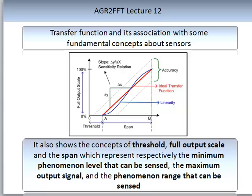This graph shows how we determine accuracy and the maximum and minimum measurement. All of these considerations must be monitored and recorded during sensor development. You can see the phenomenal range and how it is calculated. The response shown here is linear. In red is the ideal transfer function — the slope gives you the sensitivity relation, the area between A and B gives you the span, the area between 0 and A is the threshold, and the full scale on the Y-axis runs from 0 to 100 percent.